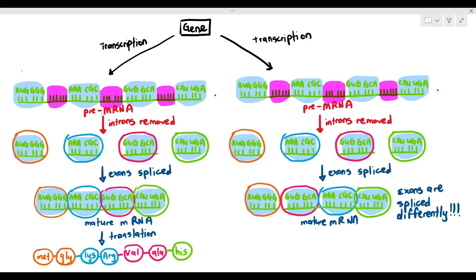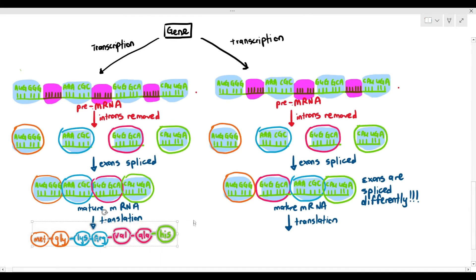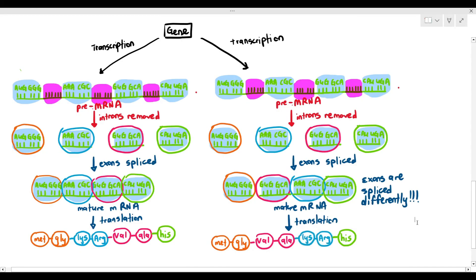You might think this is a mutation — it's not. The cell actually does this deliberately. We call this phenomenon exon shuffling, or exon juggling, where the exons are arranged slightly differently. When translation happens, the polypeptide chain sequence is slightly different: on the left it was methionine, glycine, lysine, arginine, valine, alanine, and histidine, but on the right it is methionine, glycine, valine, alanine, lysine, arginine, and histidine.